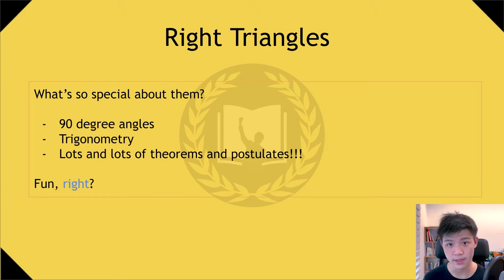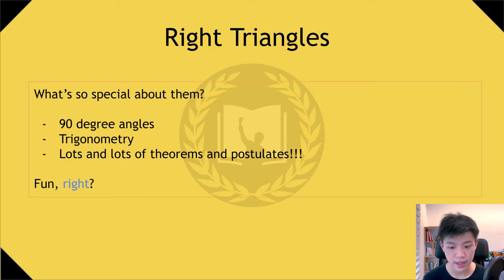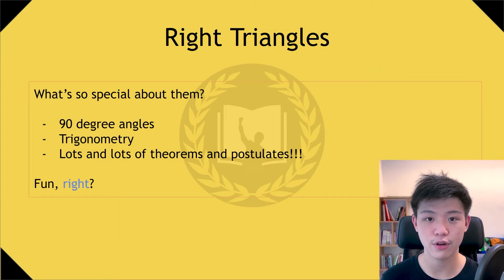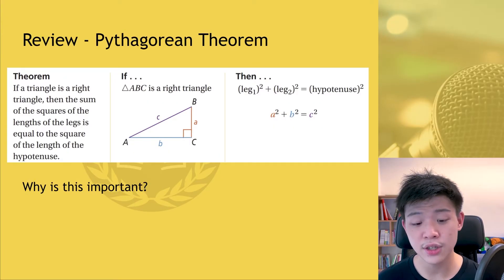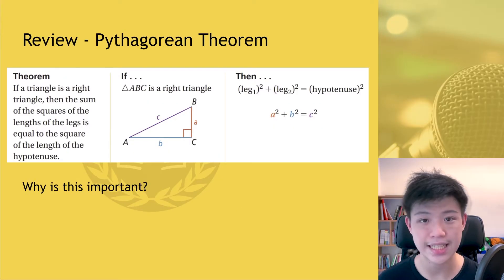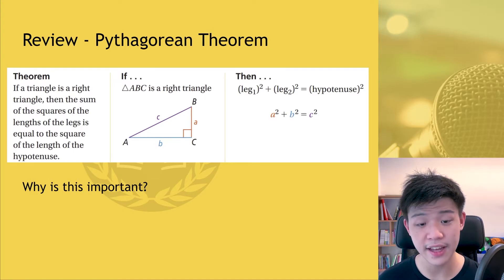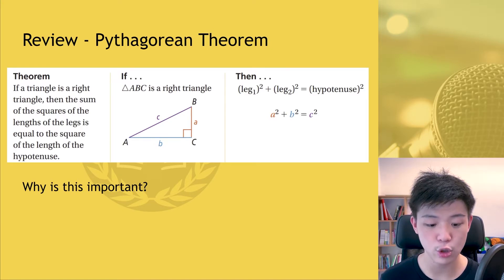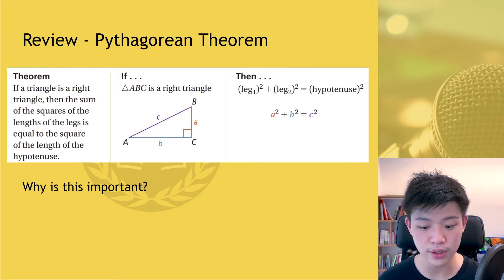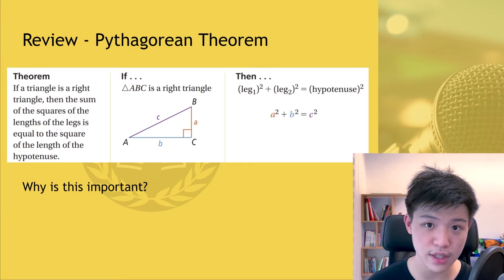Now let's get into right triangles. Right triangles are special because they have 90 degree angles, and they are also important for trigonometry, which we will learn in the future. There are lots of theorems, postulates, shortcuts, and rules for right triangles. But first, we need to understand the Pythagorean theorem. It states that if a triangle is a right triangle, then the sum of the squares of the lengths of the legs equals the square of the length of the hypotenuse — A squared plus B squared equals C squared, as shown on the triangle.